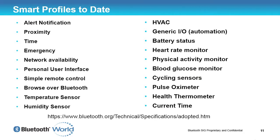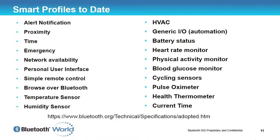In terms of low energy, there are a lot of profiles — alert notification, proximity, time, emergency, network availability. A very simple profile like network availability is effectively one bit to say whether you've got a cellular network or not, but that allows you to drive a bit on a watch display showing whether you can use your phone. There's also a personal user interface profile, simple remote control, and all sorts of other things. All of these adopted profiles are available at bluetooth.org/technical/specification/adopted.htm.